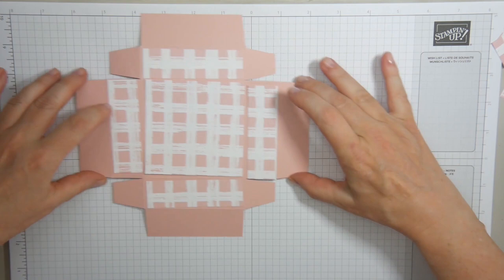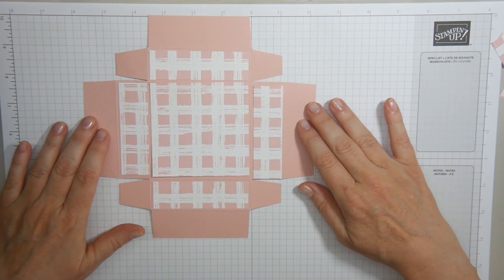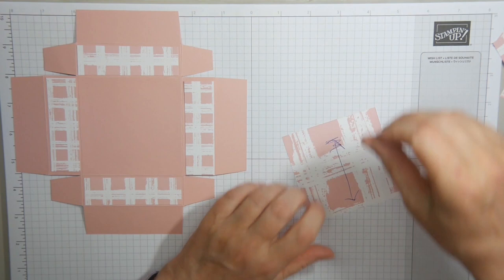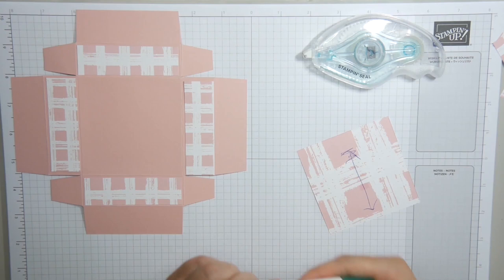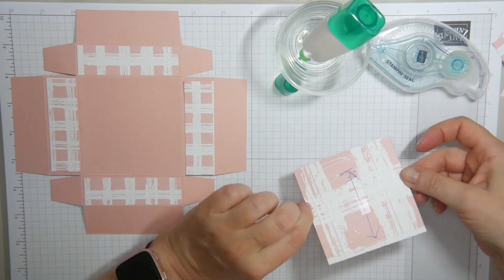These then I'm going to stick down in this order. I'll speed up for that. It's the same process, a bit of seal in the middle and tombow around the edges.